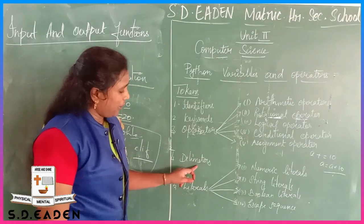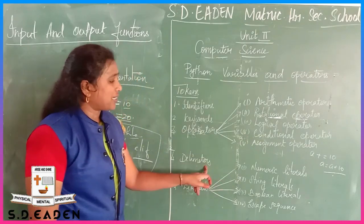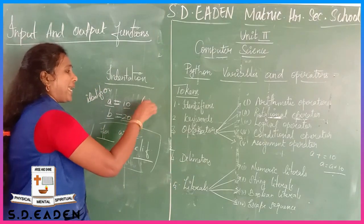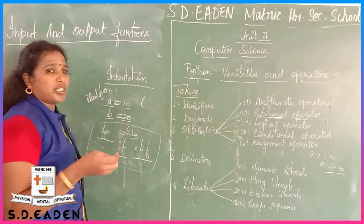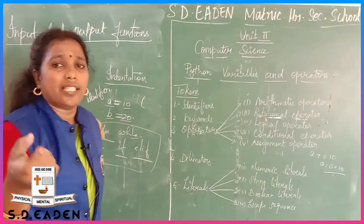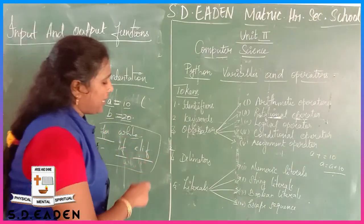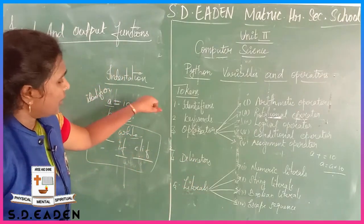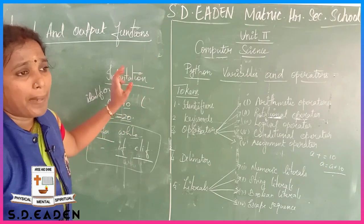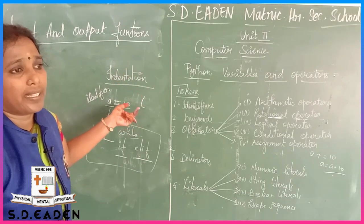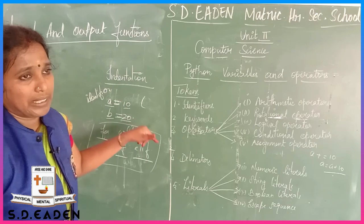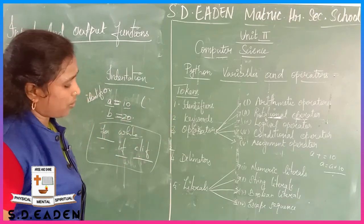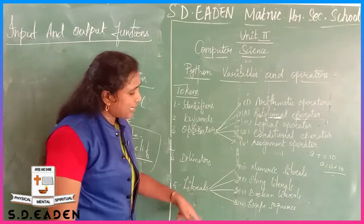Next are delimiters - for example, delimiters and punctuation. These include double quotations, parenthesis, brackets, the dictionary, tuples - we will talk about every function. Delimiters are used throughout the program.